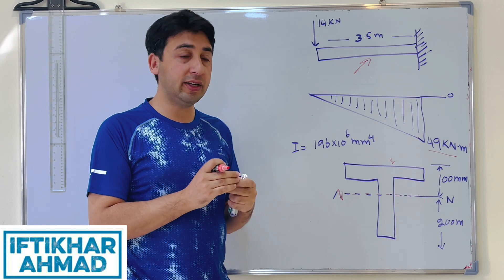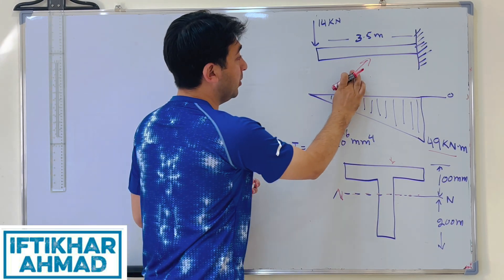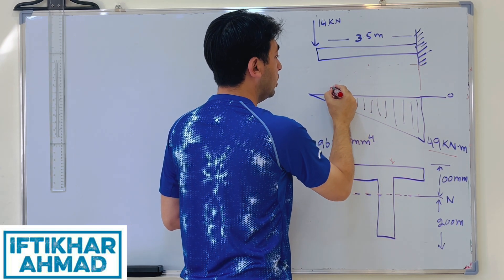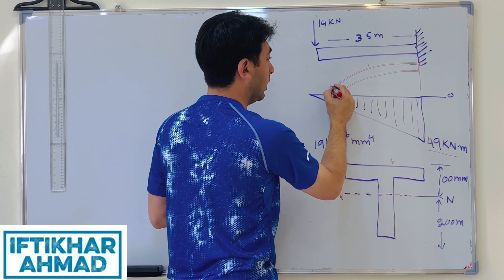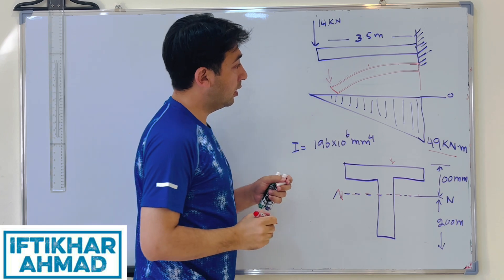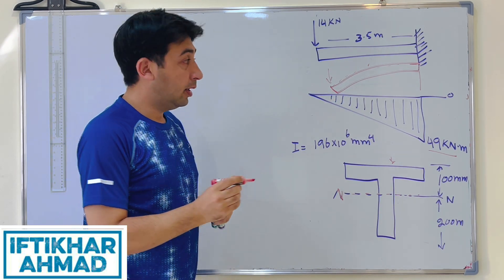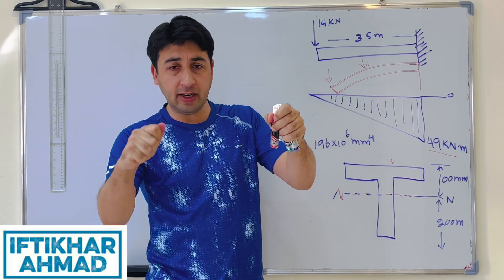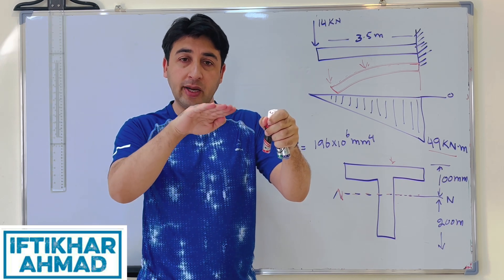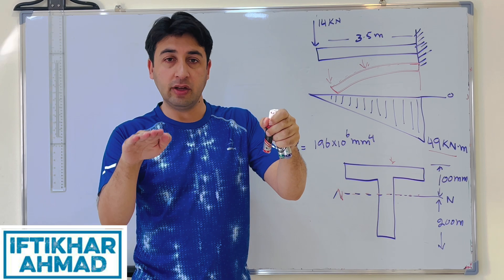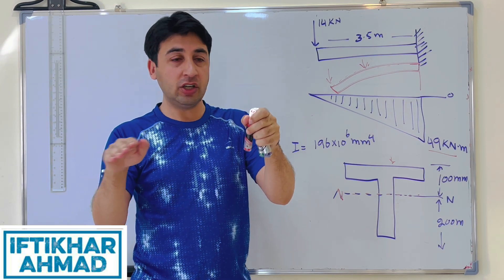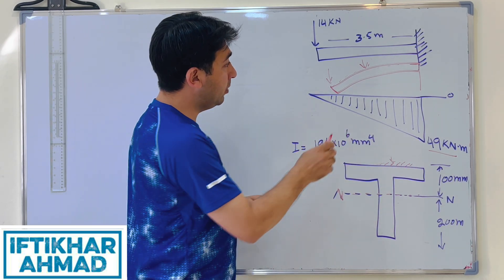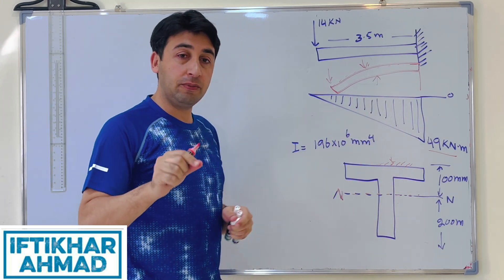We need to find two bending stresses. When this cantilever beam bends under the applied force, the top portion of the beam is in tension. So we will have bending stresses in tension at the top extreme fiber, and bending stresses in compression at the bottom extreme fiber.